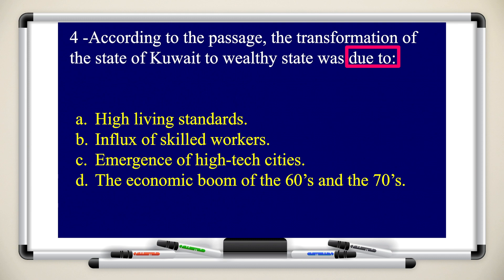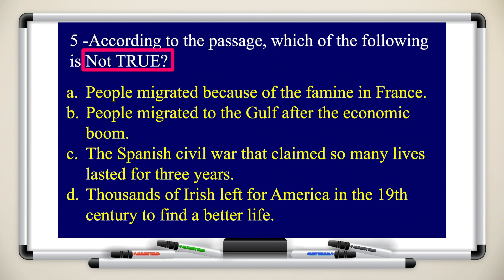Question number four: according to the passage, the transformation of the state of Kuwait to a wealthy state was due to what? The answer is the economic boom of the 60s and the 70s. According to the passage, which of the following is not true? Focus here — they don't want the true sentence, they want the false one. If you go back to the passage, you will realize it's that people migrated because of the famine in France. This is not true; this is false. The other sentences are true though.